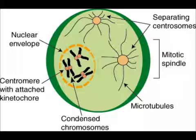In prophase, three activities occur simultaneously. First, the nucleoli disappear and the chromatin condenses into chromosomes. Second, the nuclear envelope breaks down. Third, the mitotic spindle is assembled.